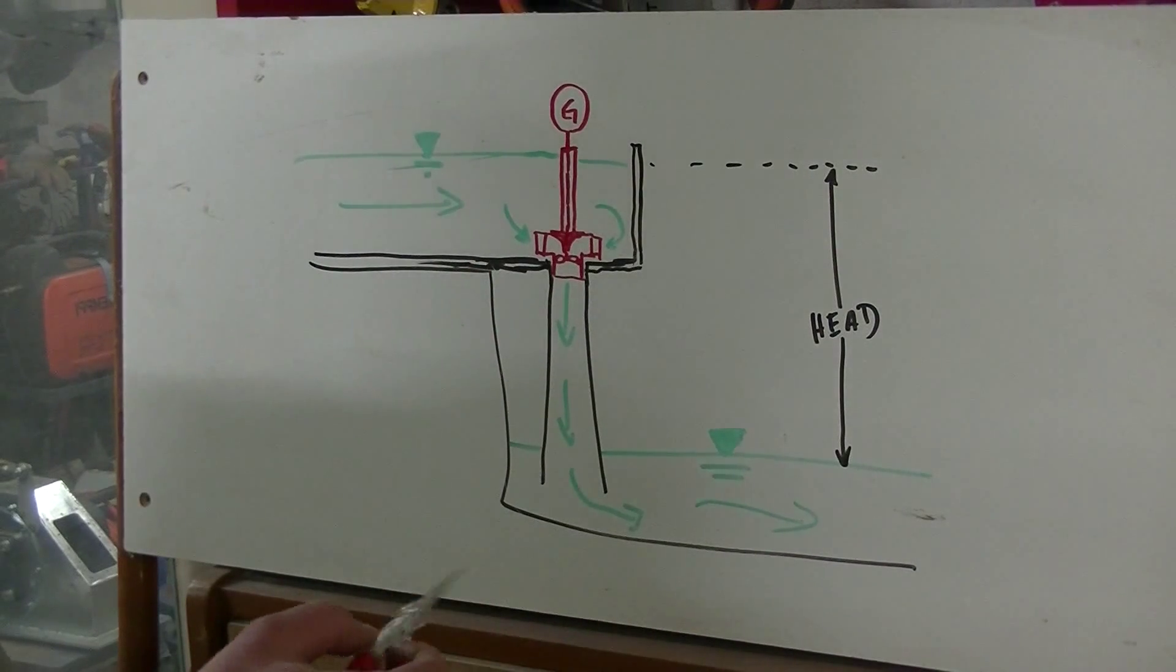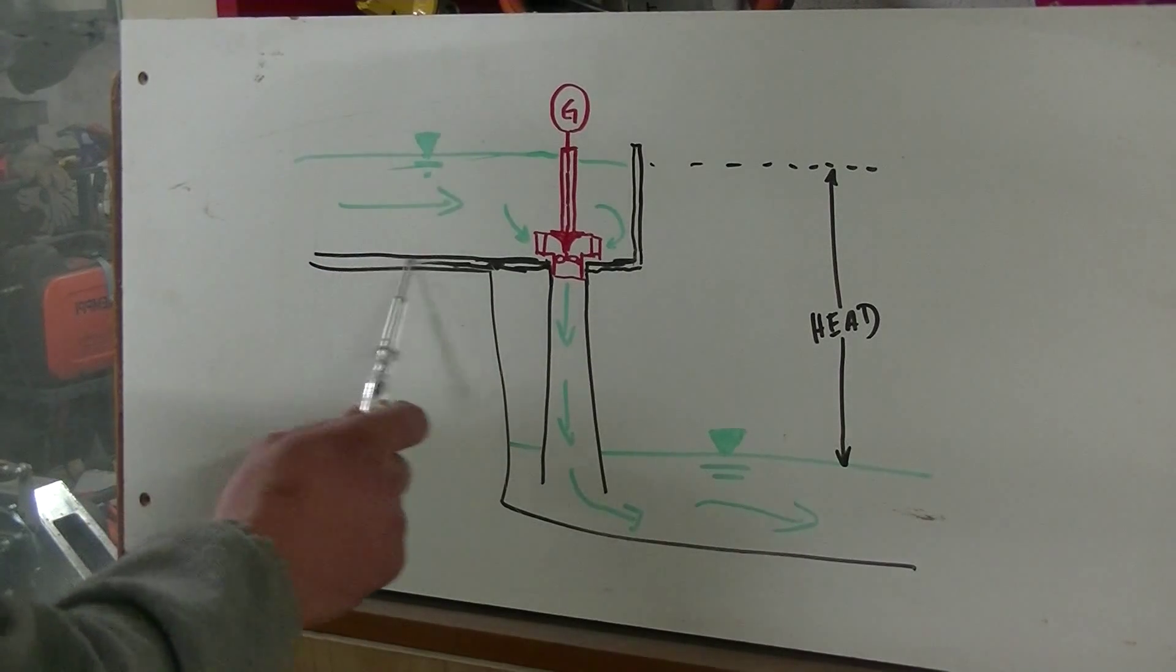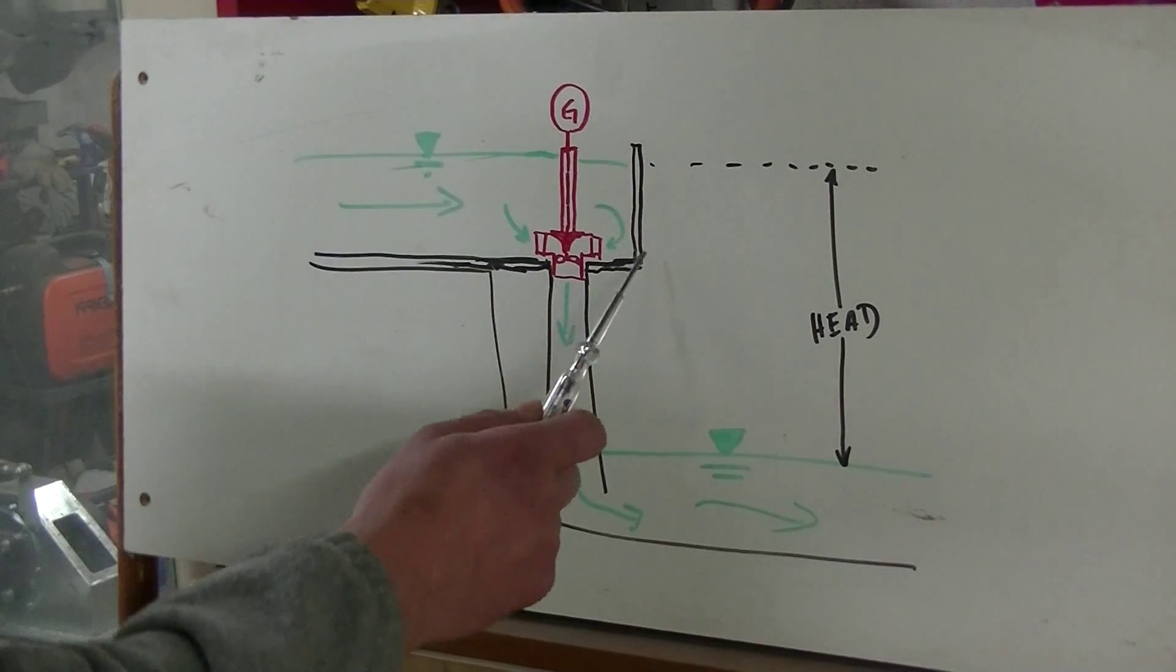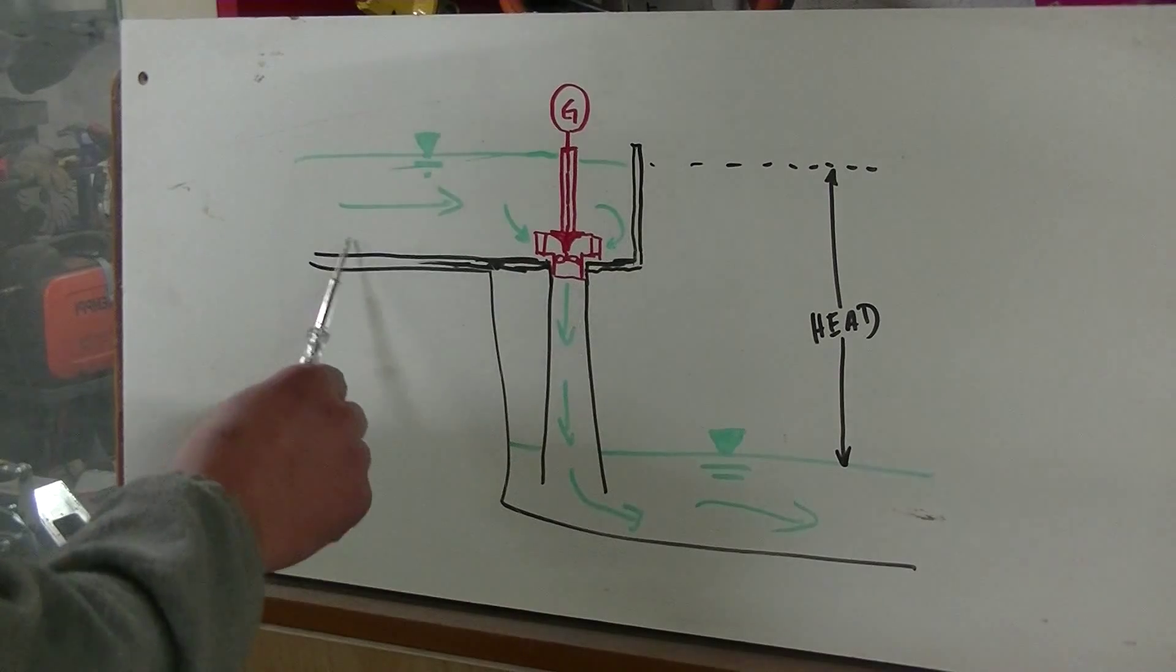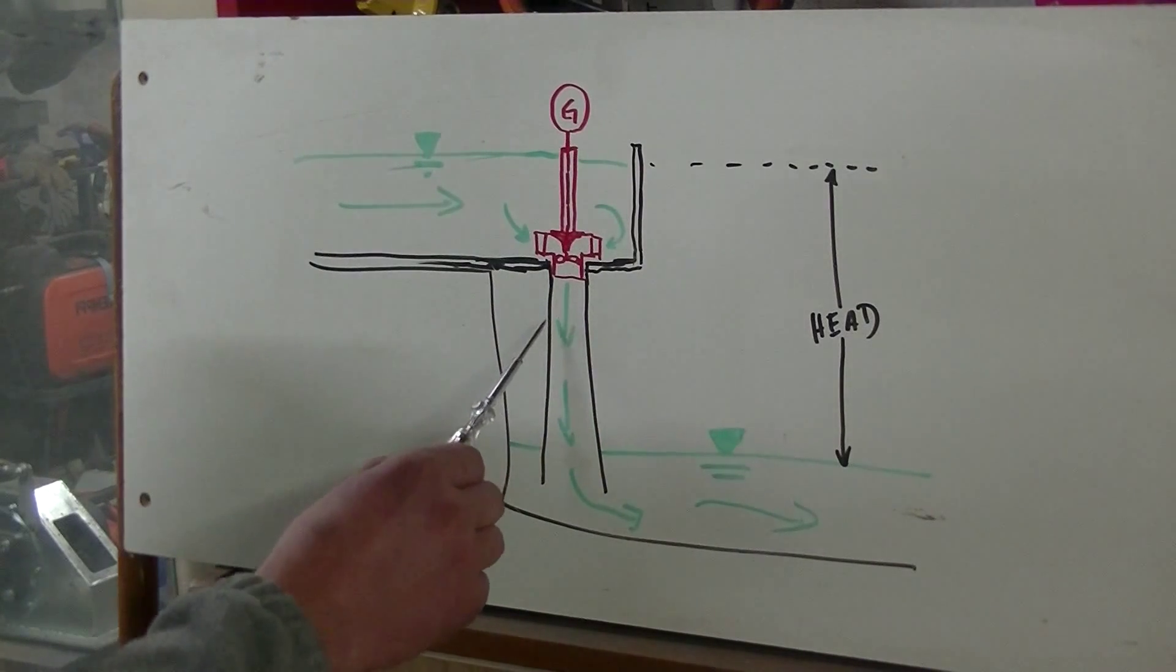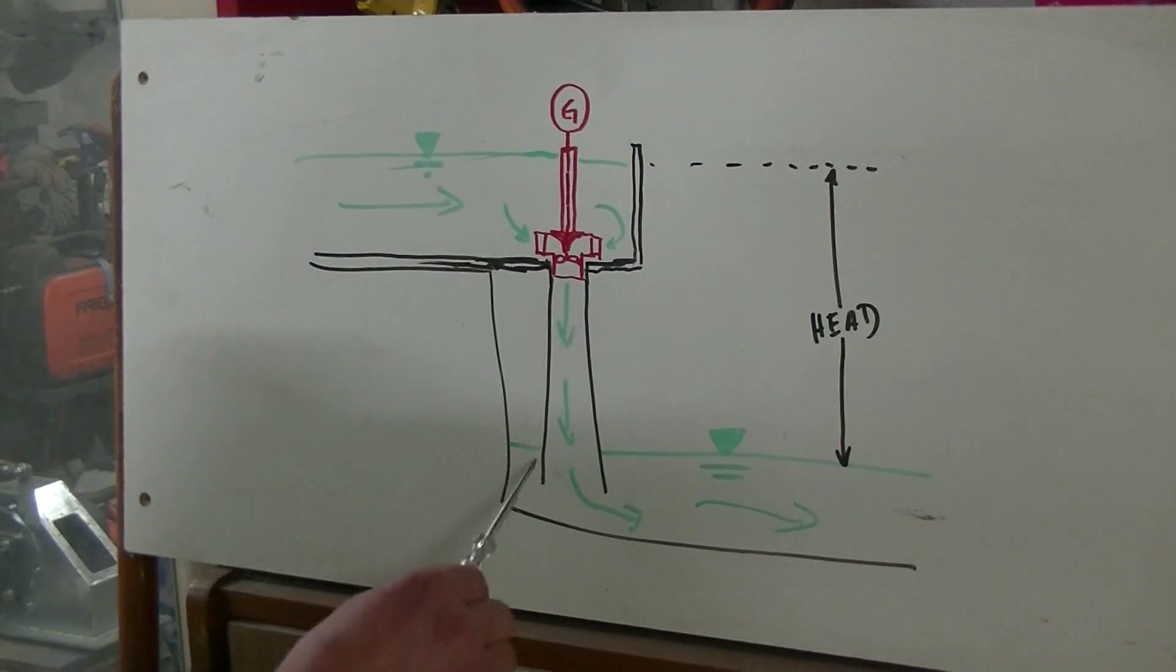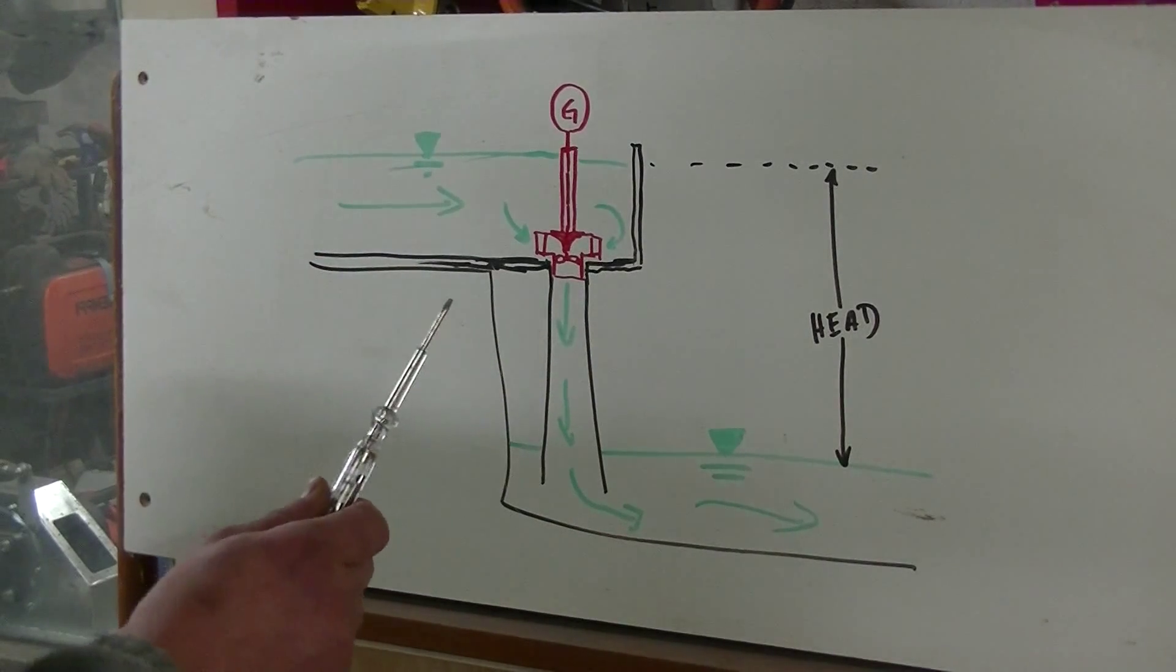To use this difference, you need a channel on the higher level to accumulate the water, then lead it to an intake channel, through the turbine and draft tube - this conical piece here - to the lower level. The difference between the lower and higher level is called the head.